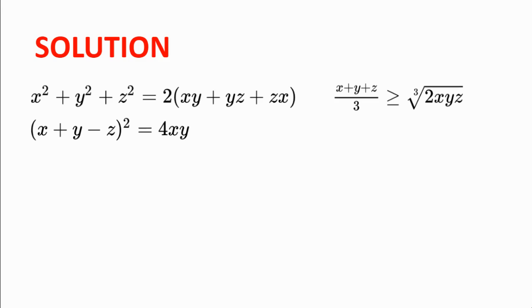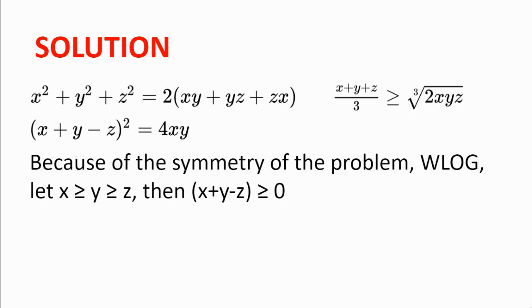But we need to ensure that x + y - z is non-negative, because the AM-GM inequality only works with non-negative reals. But due to the symmetry of the problem, without loss of generality, we can have x ≥ y ≥ z. And so then, x + y - z ≥ 0.